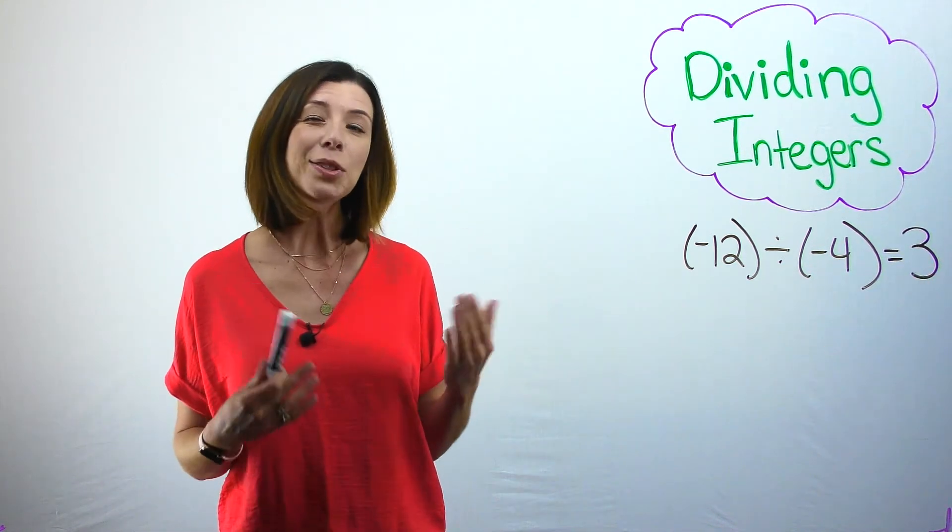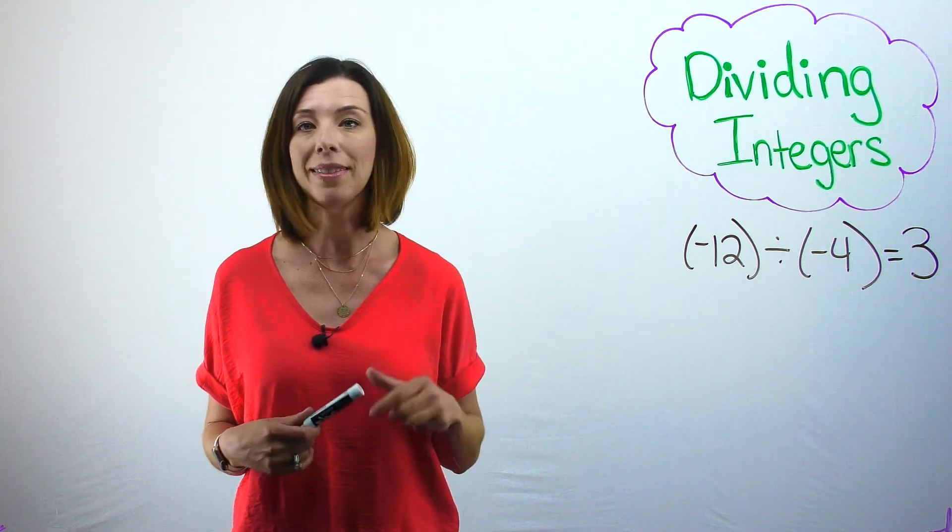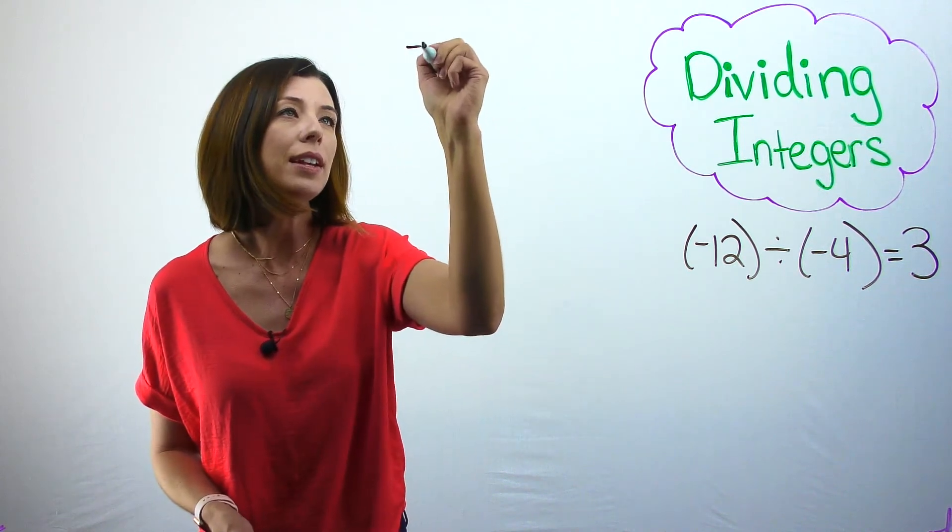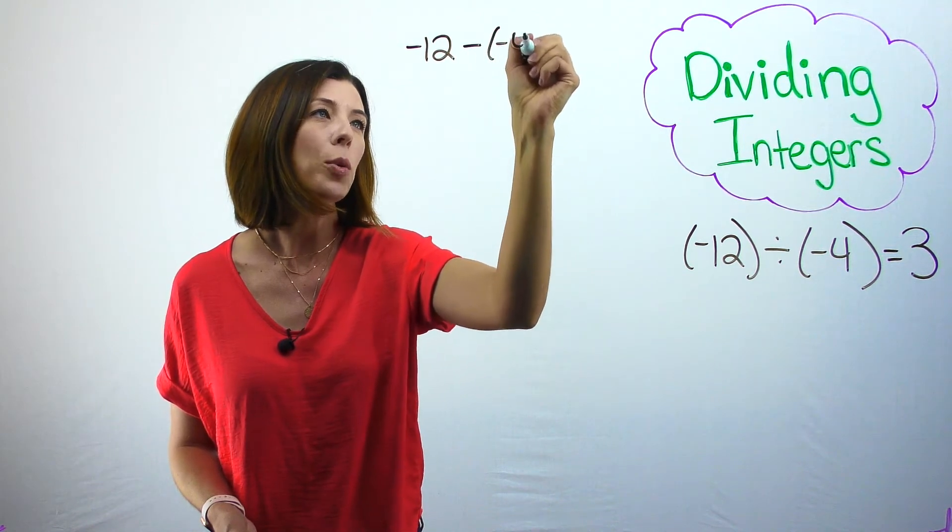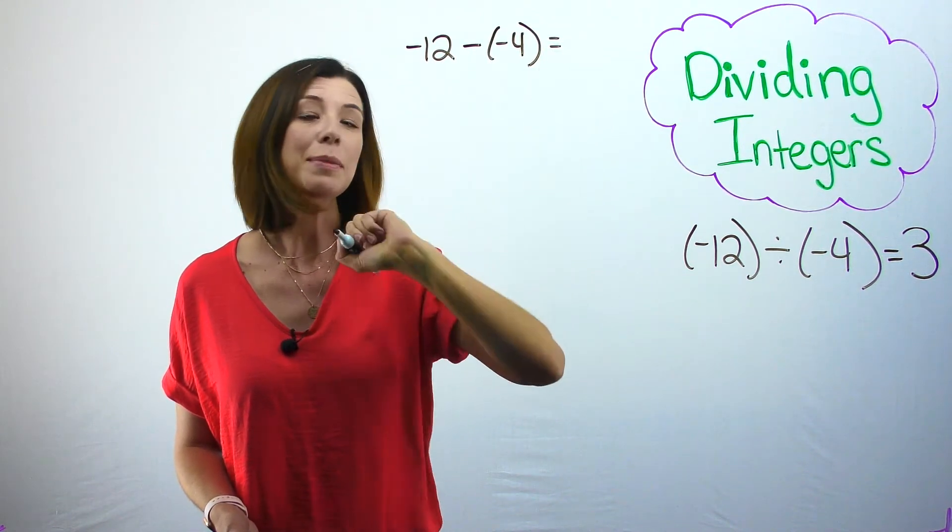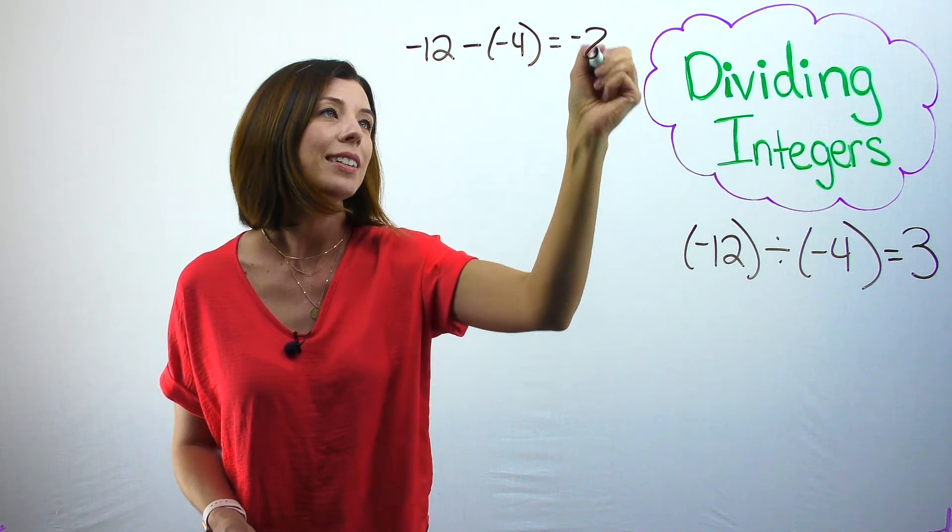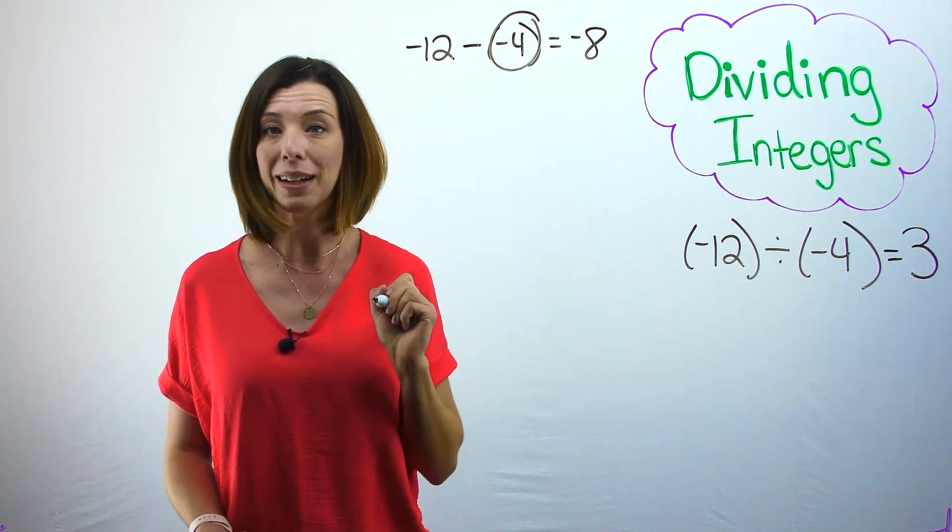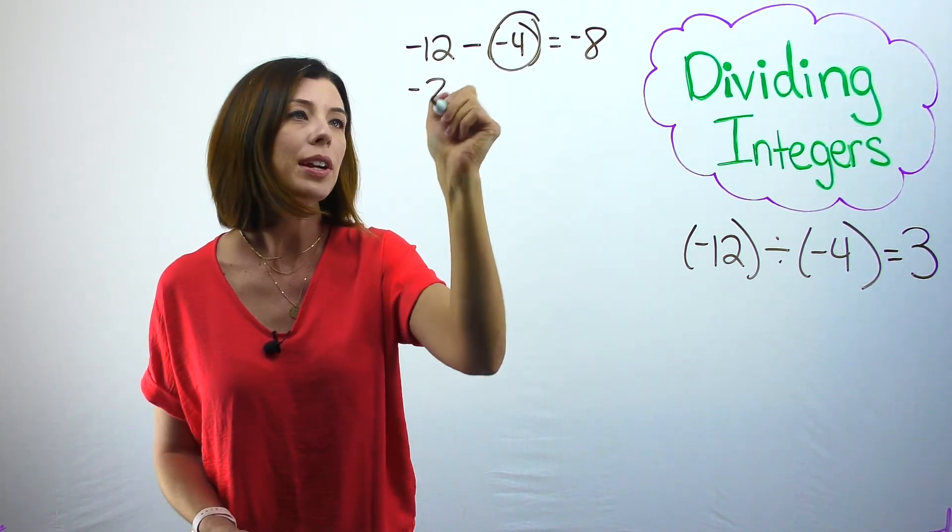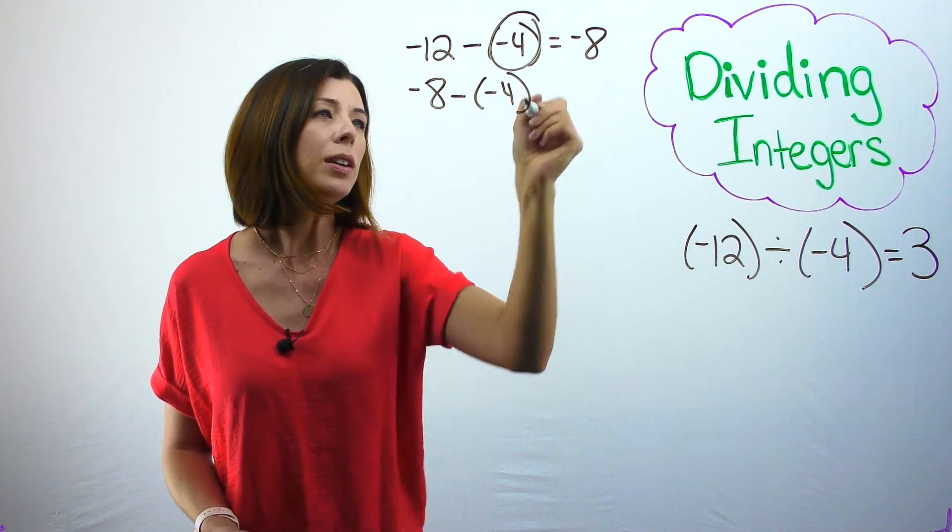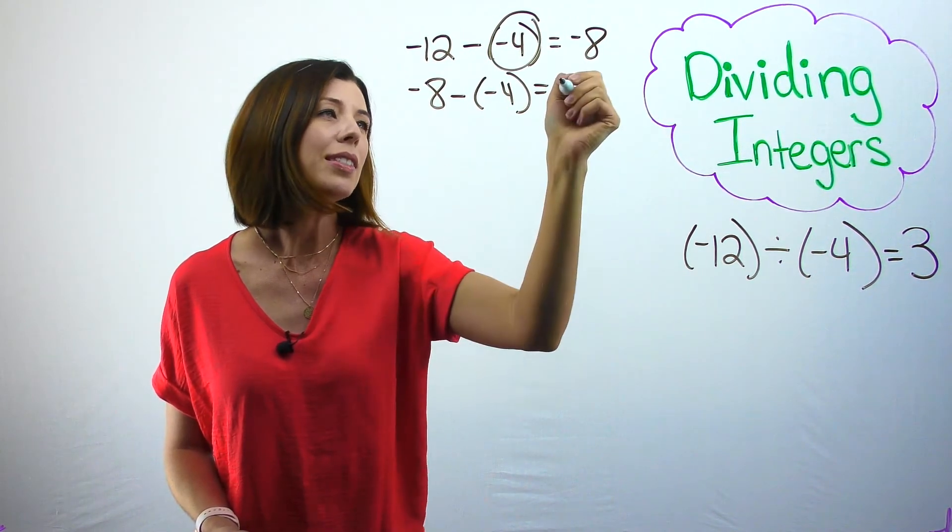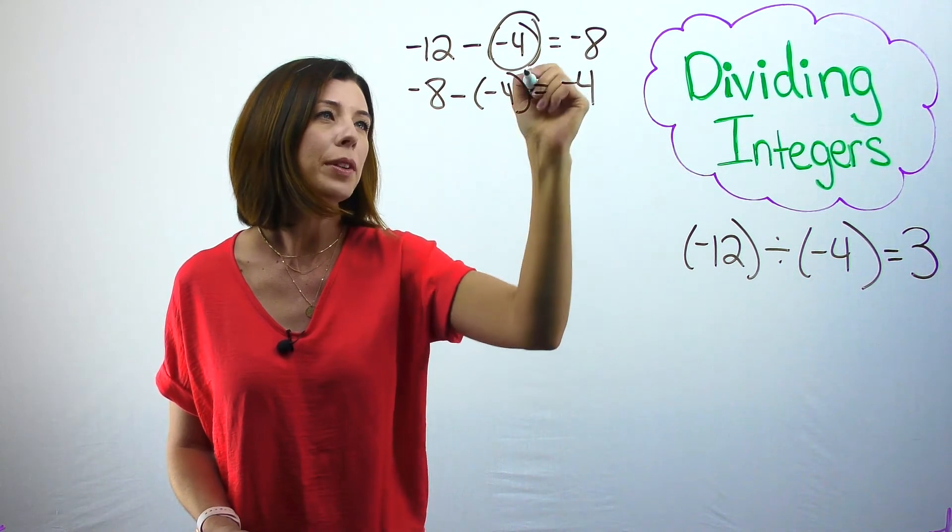Again, I can use repeated subtraction to check my thinking. I'm going to start with negative 12. And I'm going to subtract out negative 4. This leaves me with negative 8. There's one group of my negative 4. Then I'm going to start with negative 8. I'm going to subtract out my negative 4, which is going to leave me with negative 4. There's my second group.